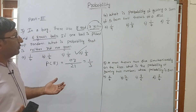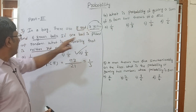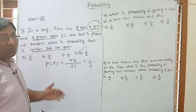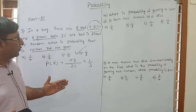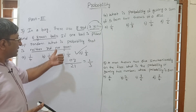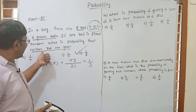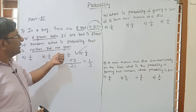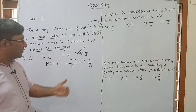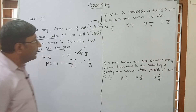7 by 21 simplifies to 1 by 3. So our correct answer is 1 by 3. For this type of question: total outcome is 8 red plus 7 yellow plus 6 green equals 21. Favourable outcome is what is asked — neither red nor green, so only 7 yellow. Therefore 7 by 21 equals 1 by 3.